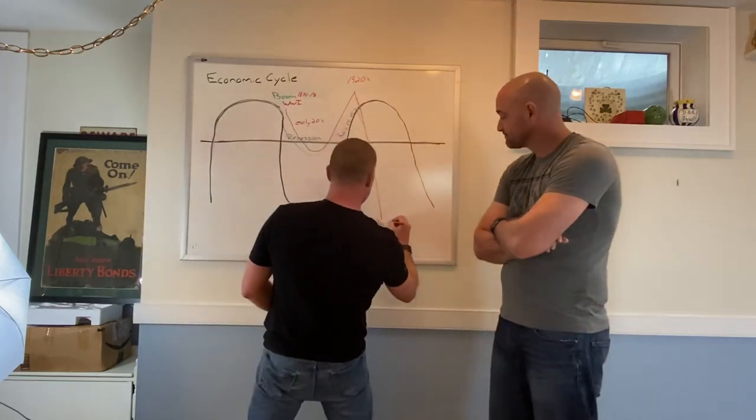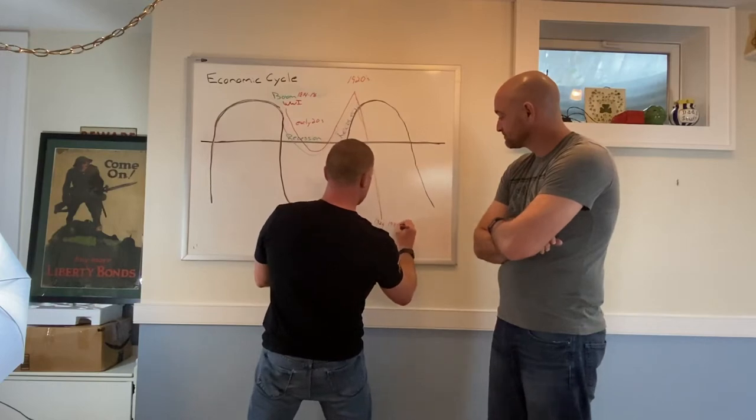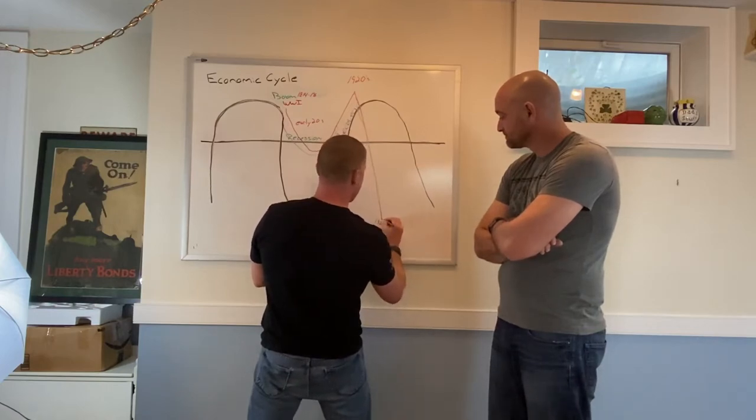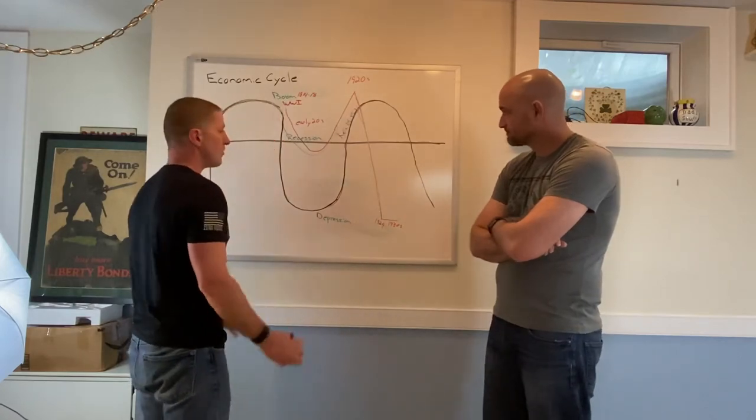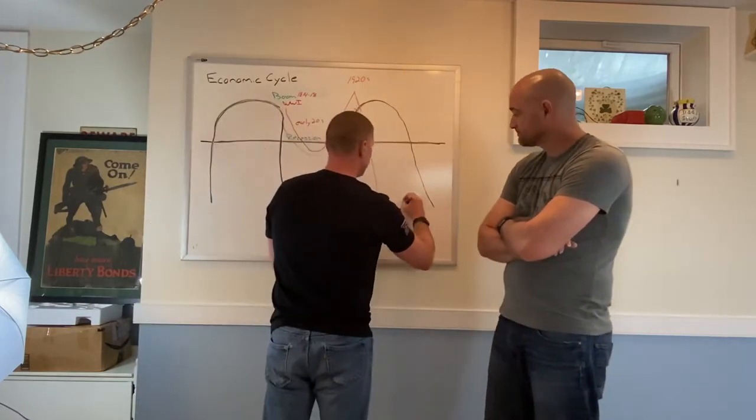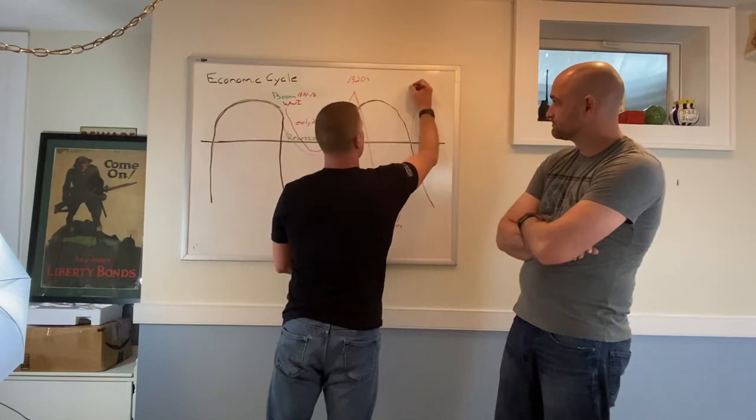So now, throughout the 30s, you're going to see this economic depression that goes on. And this is going to go on for a while. Now, what's going to bring us back up? World War II.